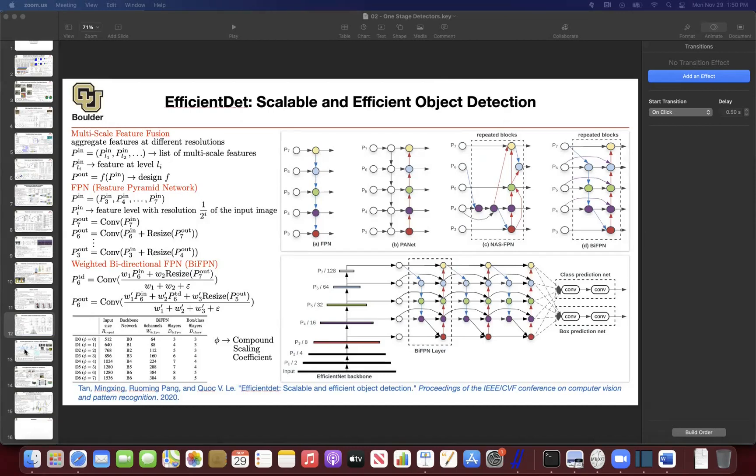Last session, we stopped here with efficient depth, and we learned about extensions of Feature Pyramid Network, and in particular, this was about BiFPN. So I want you guys to remember this for the next slide, because we are going to need it.